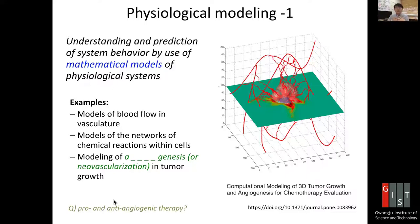There are also situations where angiogenic growth may need to be promoted. For example, someone suffering from ischemic heart disease — a loss of adequate blood supply to tissue — may need new vessel growth to help the affected organ. In that case we call it pro-angiogenic therapy.